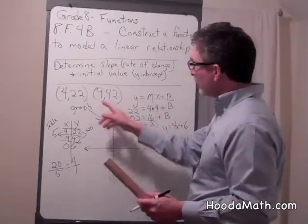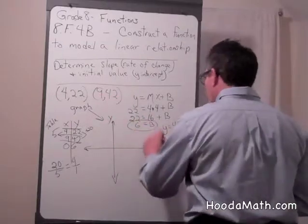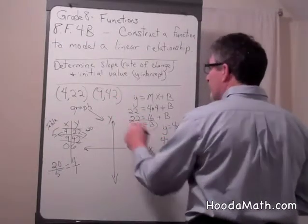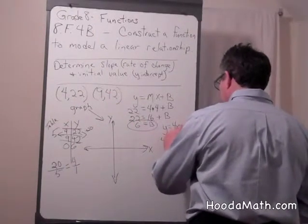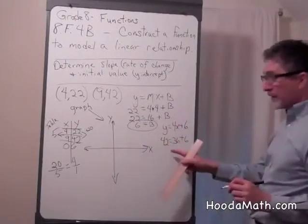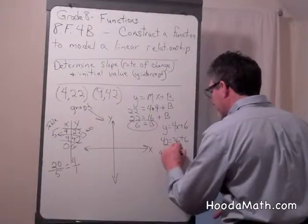To check it, we can put in these values. 42 equals 4 times 9, which is 36, plus 6, and 42 does equal 36 plus 6.